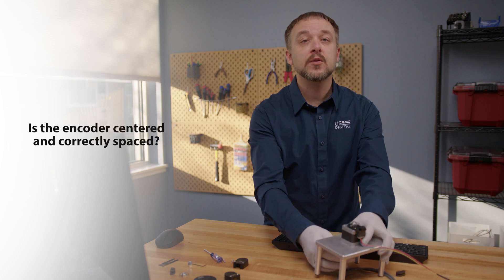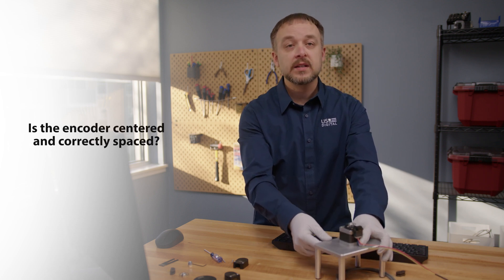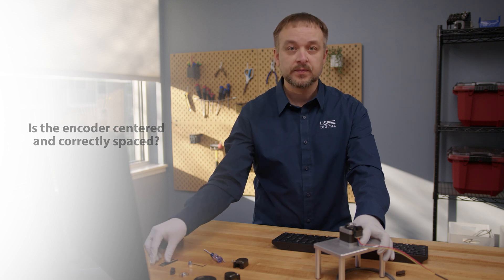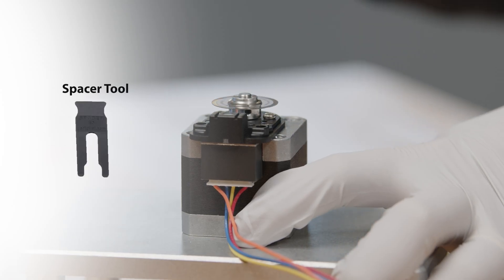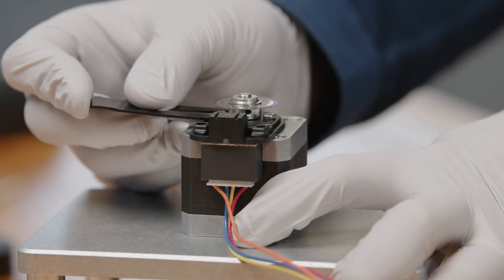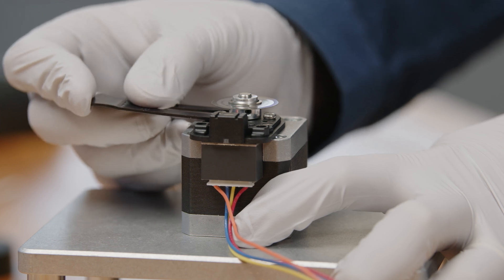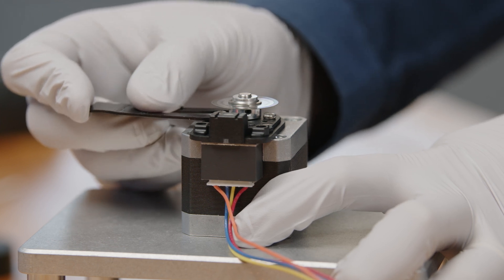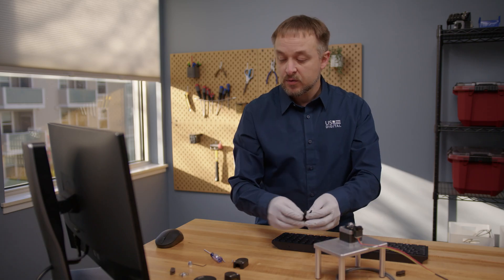If everything looks good, you're going to want to verify that the encoder base and hub disk is centered on the shaft and that the hub disk is correctly spaced in relation to the module. To do this, we're going to use the spacer tool that was provided with the order. And in this case, the spacer tool does not slide under the hub assembly. So this may be the first part of our problem. Let's correct that.